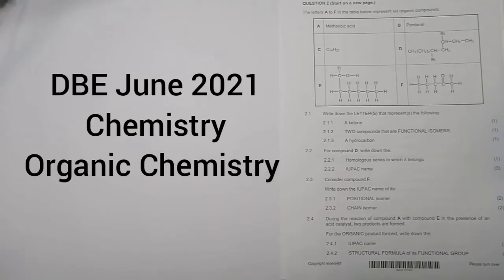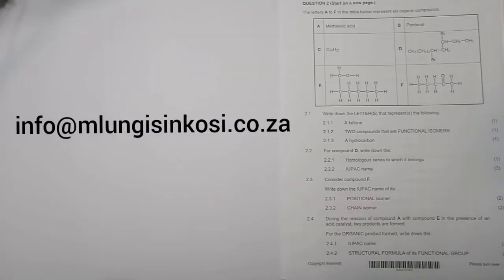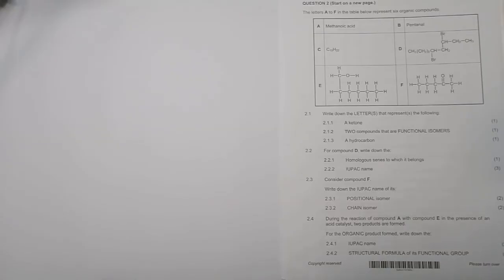Good day, ladies and gentlemen, and we are once again together. We're looking at question two from the DBE 2021 paper, the June exam. If you haven't subscribed, please just be part of the family. For those of you who need assistance, our email address is info at mlungisengosi.co.za. Let's quickly get into this question and see what it has in store for us. You can actually download this paper from the DBE website.